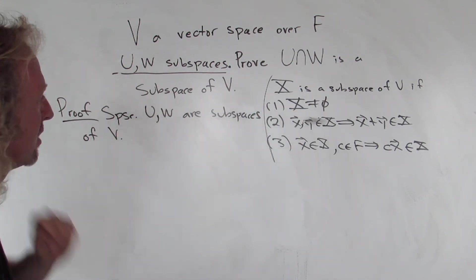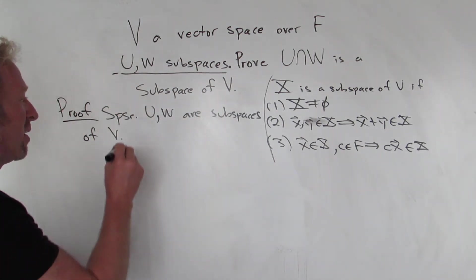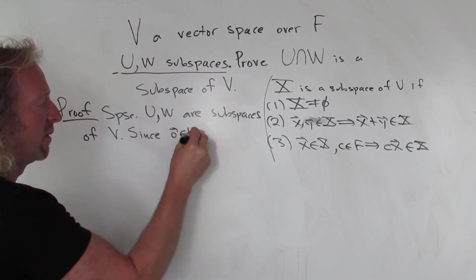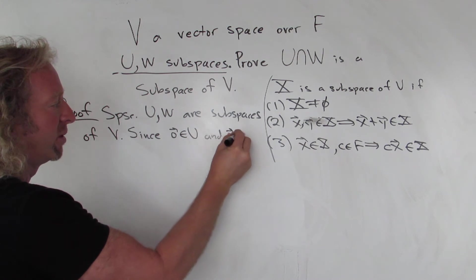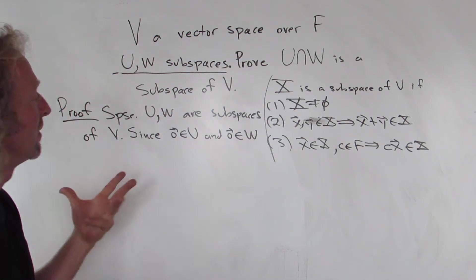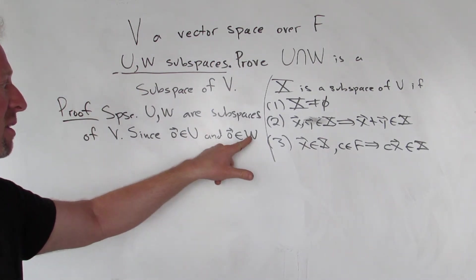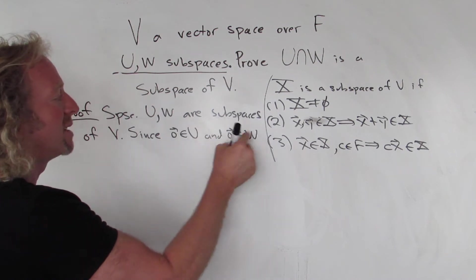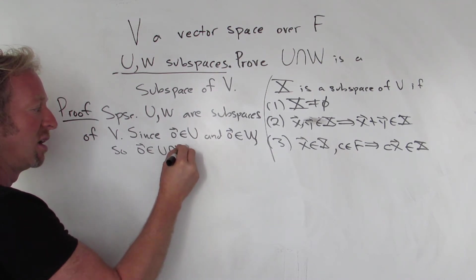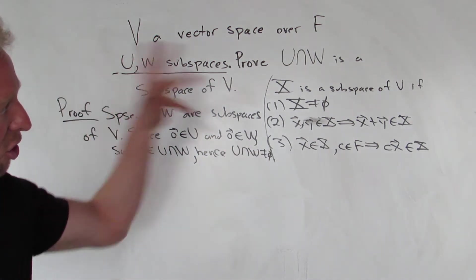Let's show that the intersection is not empty. We need to show there is something in the intersection — the natural choice is the zero vector. Since U is a subspace, the zero vector is in U. Since W is a subspace, the zero vector is in W. It's in U and it's in W, which is precisely what it means for the zero vector to reside in the intersection. Hence, the intersection is non-empty, satisfying the first condition.